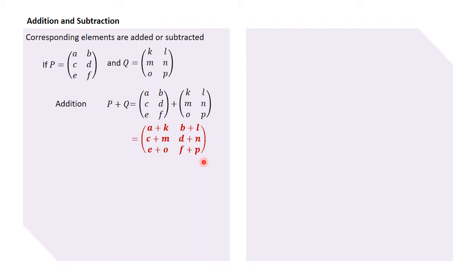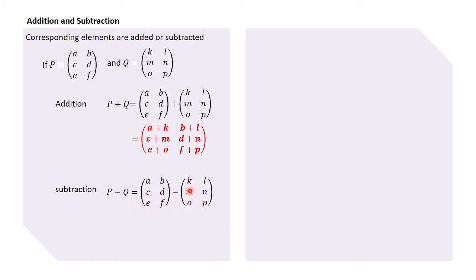Similarly, if we wanted to do subtraction — P minus Q — we do the same thing: subtract corresponding elements. That means a minus k, b minus l, c minus m, d minus n, e minus o, and f minus p, because those are corresponding elements in the two matrices P and Q. Therefore the result would be: a minus k, b minus l, c minus m, d minus n, e minus o, and f minus p.